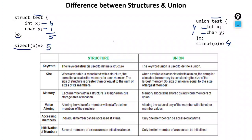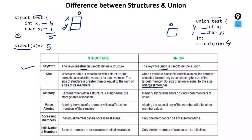Now let's compare point by point. First, keyword: structure uses 'struct', union uses 'union'. Second, size: structure takes the total size of all variables, while union takes the size of the largest member. Third, memory: each member within a structure is assigned a unique storage area — if variable o is created, x has its own space and y has its own space. But in a union, both x and y share the same memory space. Memory allocated in a union is shared by all individual members.